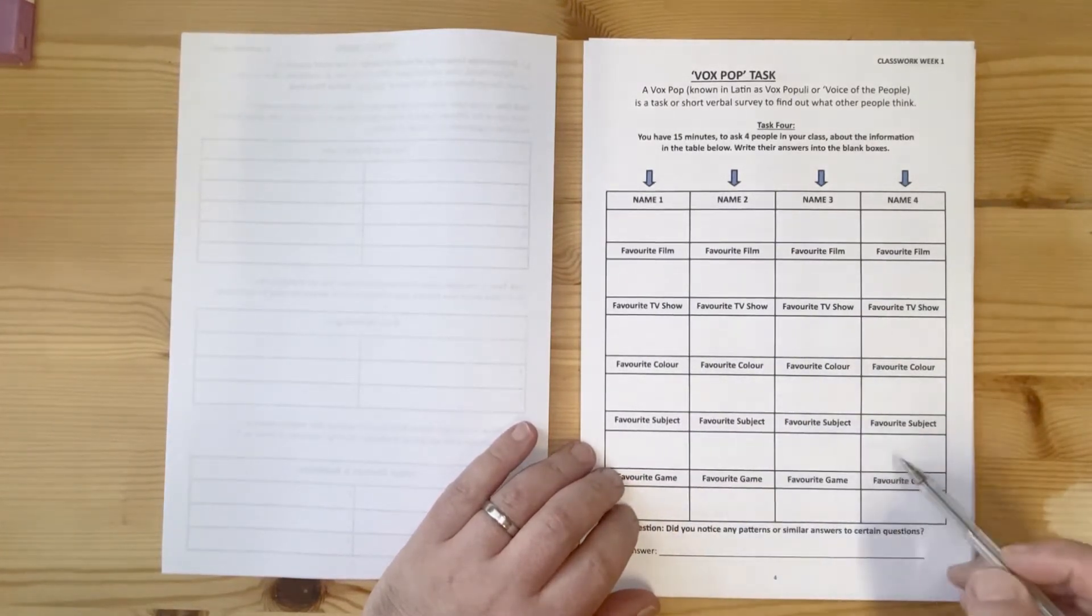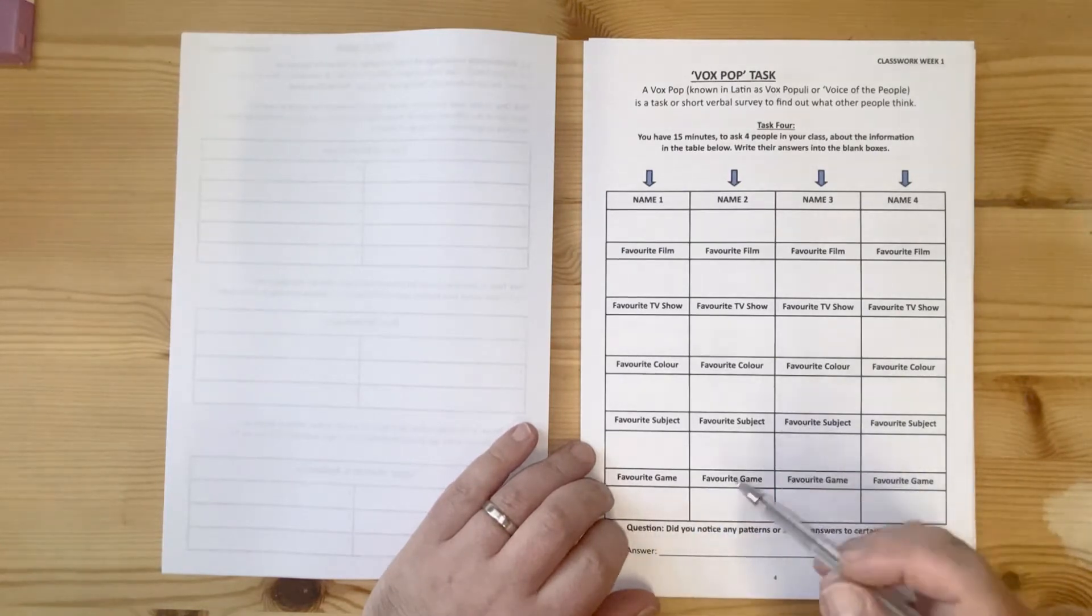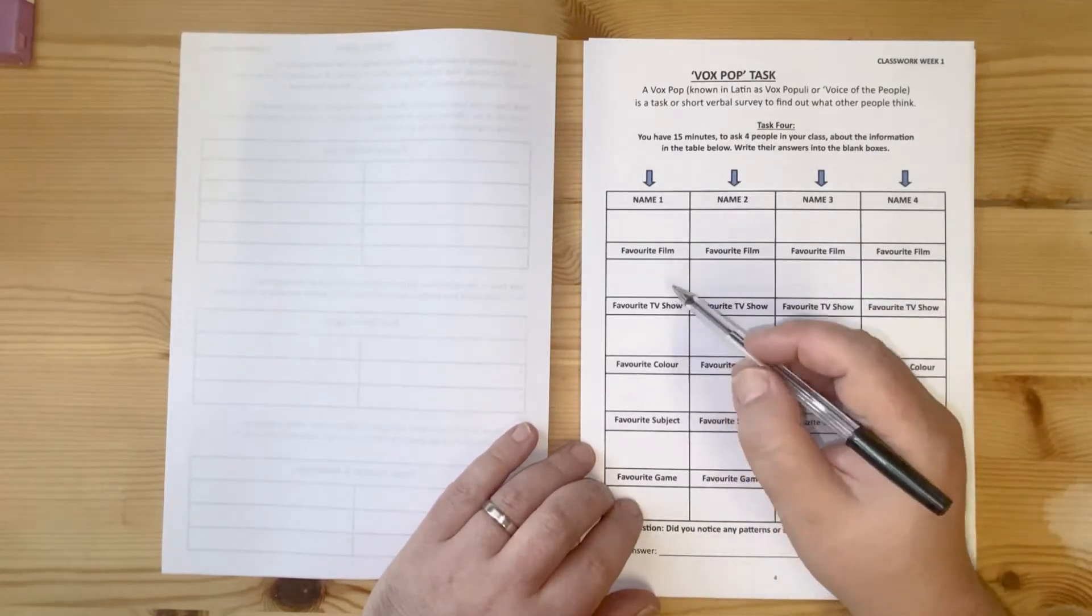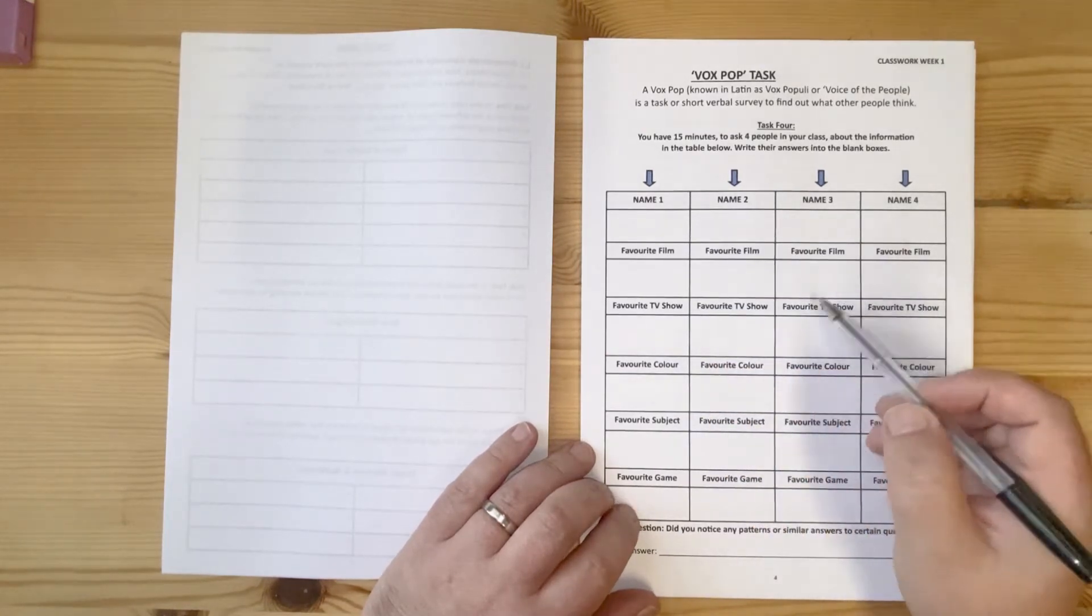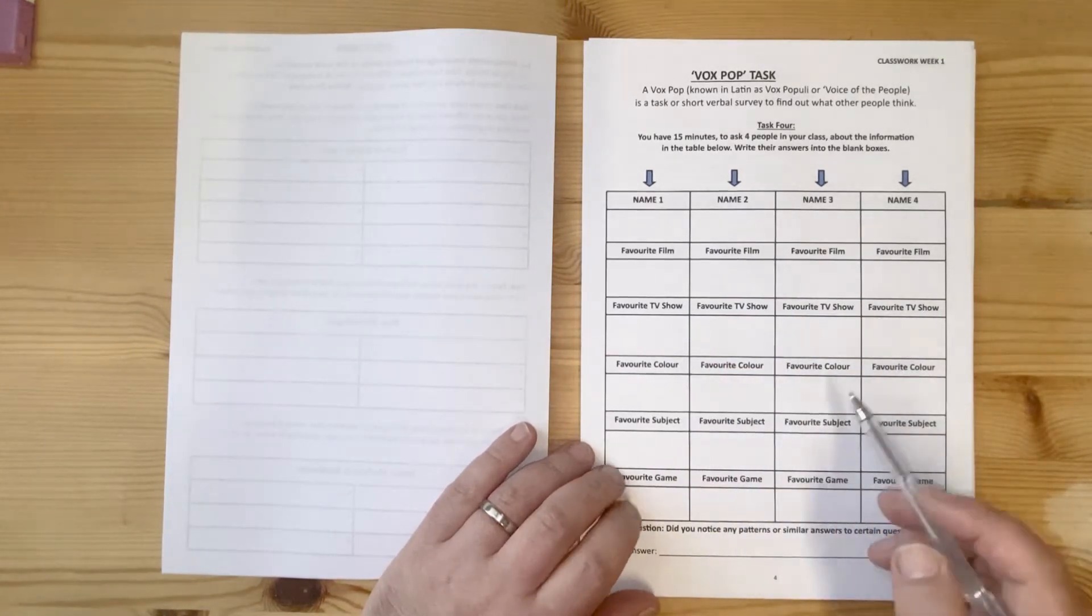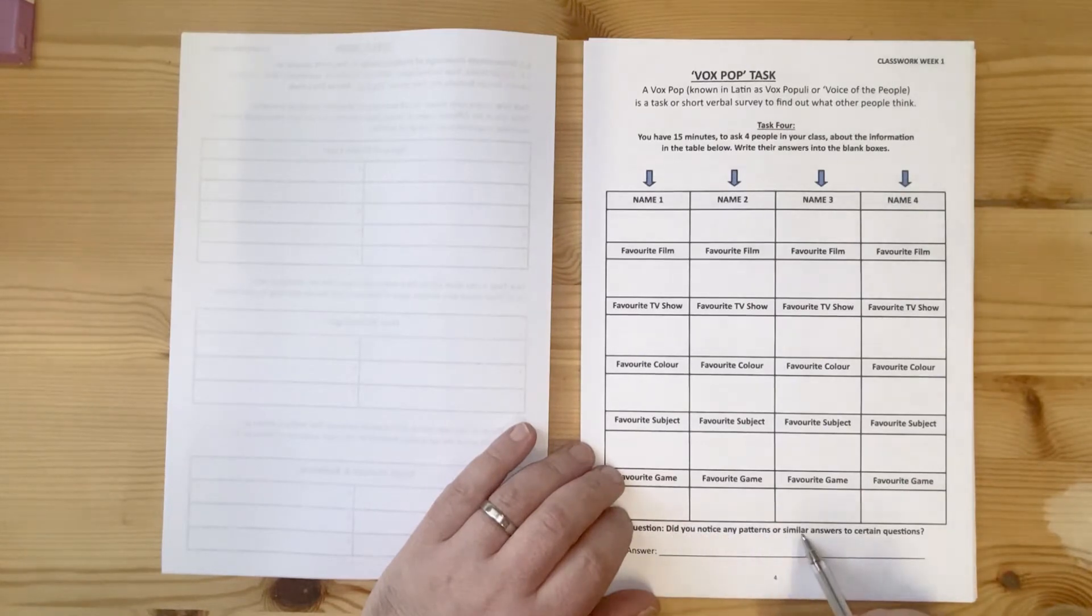Obviously we'll then find out the more common ones amongst people, whether maybe two or three people might have the same film, or two or three of you might have written the same color. Did you notice any patterns or similar answers to certain questions? You'll put your answer in here at the bottom of the page.